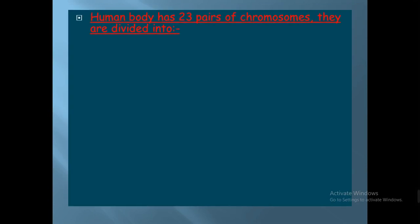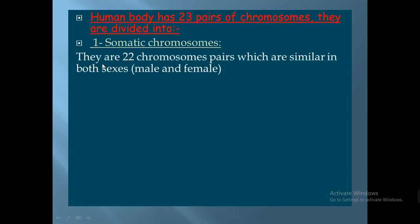As we know, each cell of the body has a karyotype — the arrangement of chromosomes in descending order according to their size. The first 22 pairs of chromosomes in each type of cell in males and females are called autosomes or somatic chromosomes, and they are similar in both sexes.